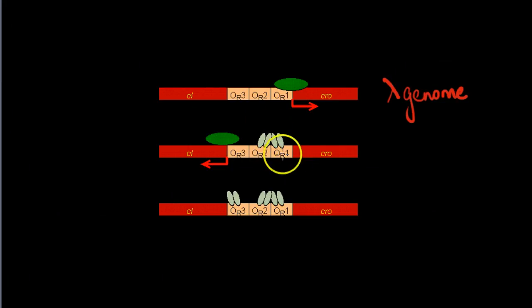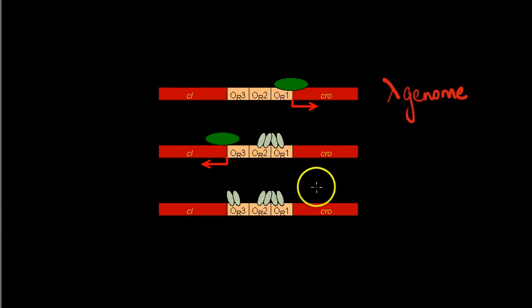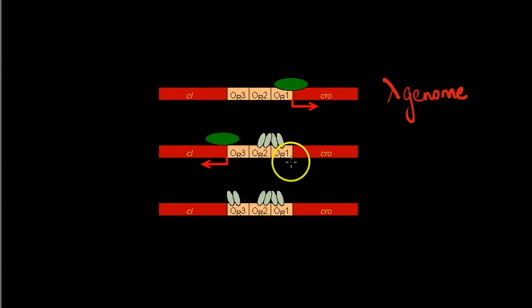Once the repressor protein binds to OR1, the likelihood of another repressor protein binding to the adjacent operator increases. Thus, OR1 and OR2 are almost always simultaneously occupied by the CI repressor protein.